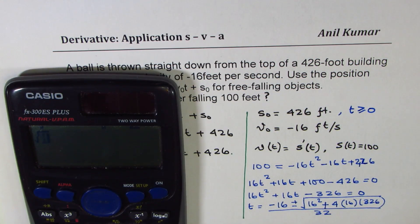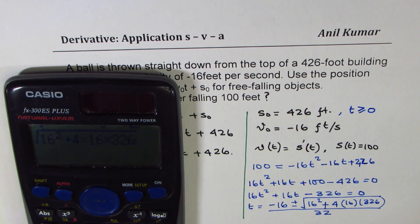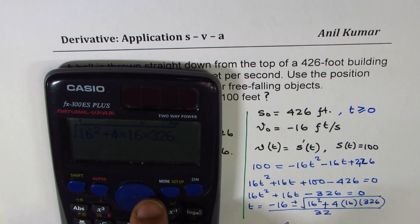So let's figure this out. We have square root of 16² plus 4 times 16 times 326, which is equal to 8. So we will take this positive value and take away 16 from here times minus 16. It gives us some answer. We will divide this by 32.